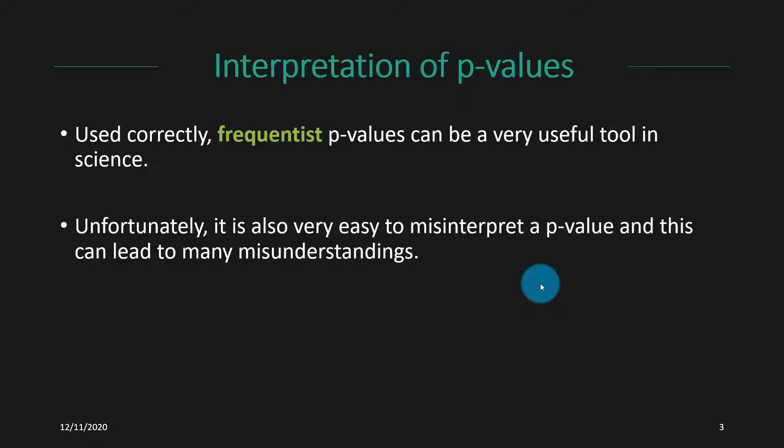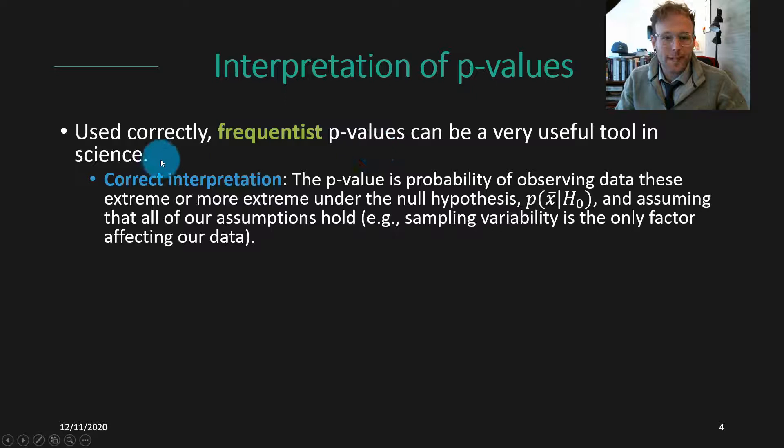It's not just whether something crosses p=0.05 or not — we're going to get a continuous p-value, which might be smaller than 0.05, smaller than 0.01, or quite large. These p-values are one piece of information we can use in interpreting our results. Used correctly, p-values are a very useful tool in science. Unfortunately, it's also very easy to misinterpret them, and that can lead to many misunderstandings. So I want to focus on how to interpret the p-value — and especially how not to interpret it — when doing calculations such as t-tests.